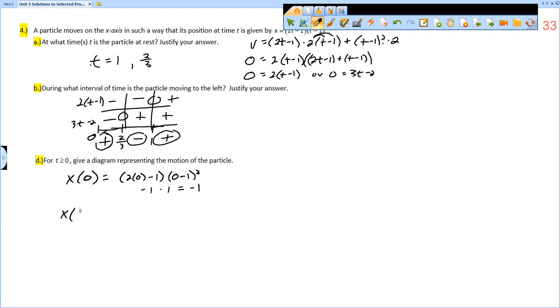Then we want to know where does it go, how far to the right when it changes direction at 2/3. So 2 times 2/3 minus 1 times 2/3 minus 1 squared. 2 times 2/3 is 4/3 minus 1 is 1/3, times 2/3 minus 1, that would be negative 1/3 squared, would be 1/9. So 1/3 times 1/9 is 1/27. It starts at a position of negative 1, then moves to the right until it gets to a position of 1/27.